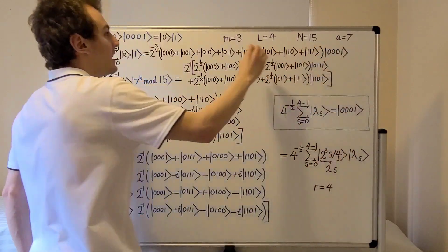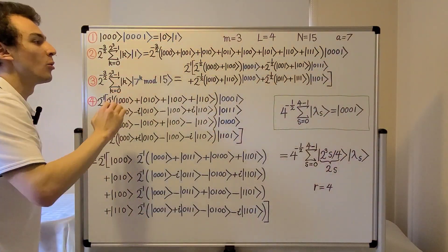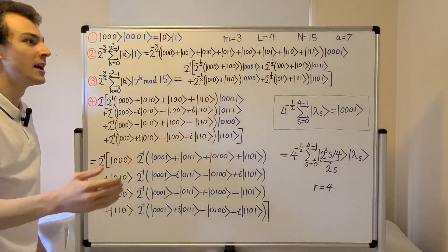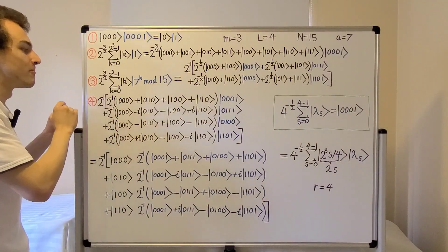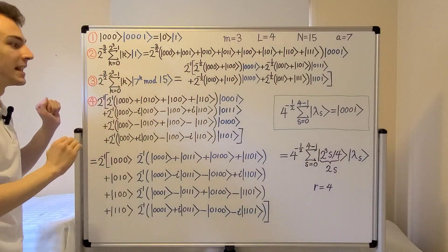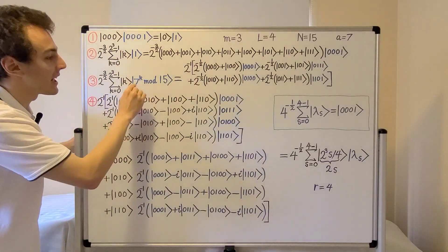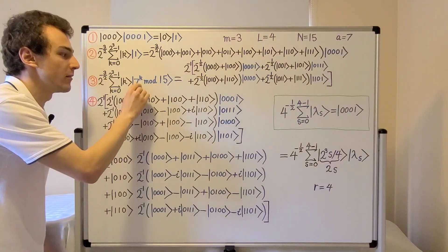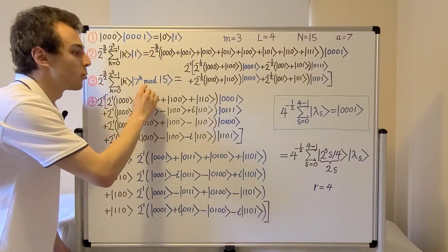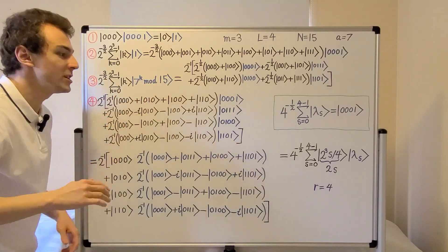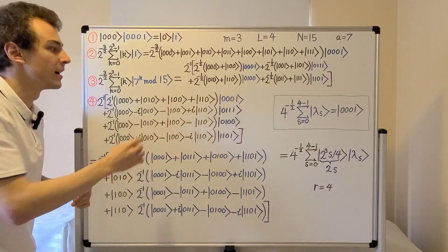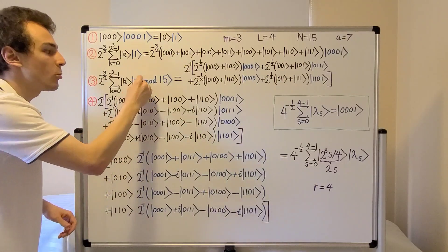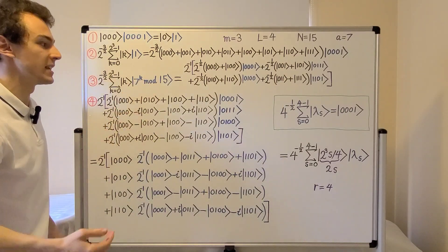Now that we've seen step one and step two, which are identical to the previous video where we had a equals 11, let's have a look at step three. Step three is different — now we are performing the modular exponentiation procedure with a different value for a. We're using a equals 7, but we're still dealing with mod 15, so we're going to be doing modular arithmetic mod 15. We're interested in the powers of 7 mod 15.